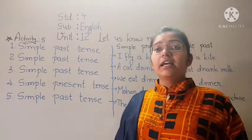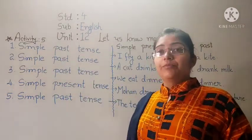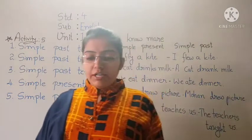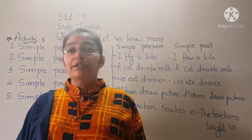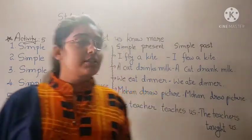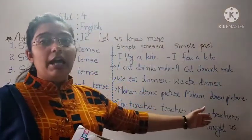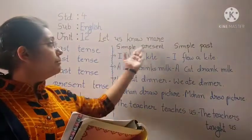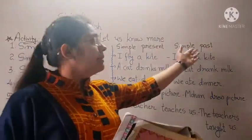So, these are all the answers for Activity 5. After that, write 5 more sentences in the present and past each. Yaha pe aap dekh sakte ho — maine do parts banaye hain: first part is Simple Present and the second part is Simple Past.